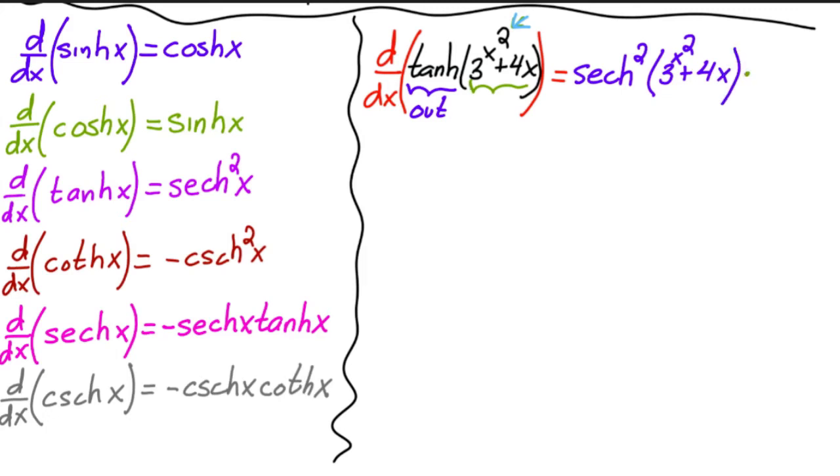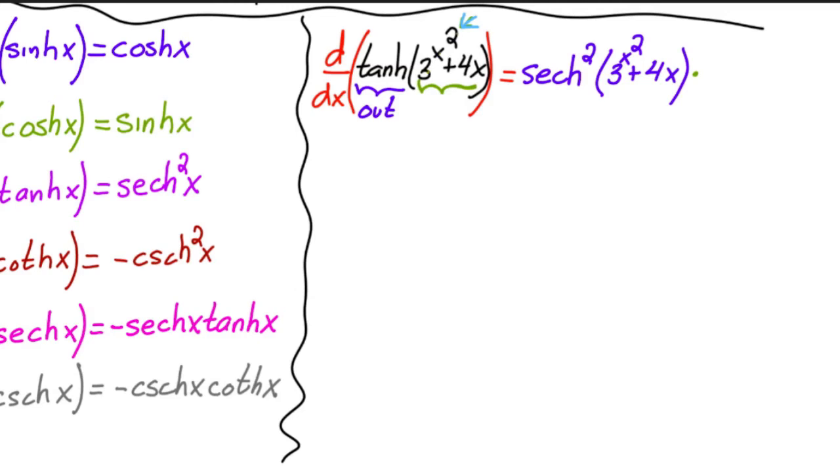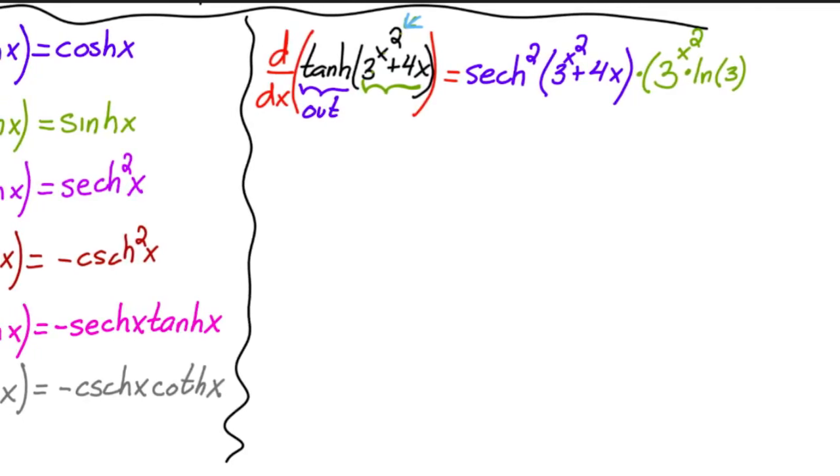Okay, and then times the derivative of the inside. Well, the inside, let me move a little bit over. The derivative of 3 to the x squared, here I also have another chain rule situation, which is going to be 3 raised to that power times natural log of 3, but then I have to multiply by the derivative of the inside, which is 2x. And then plus, I'm still here inside, plus the derivative of 4x, which is simply 4. So a couple of chain rules, but that's it, pretty similar to the rest of them.